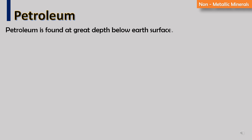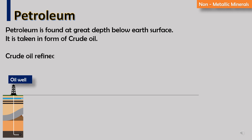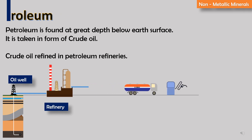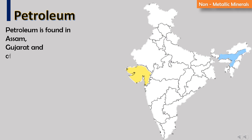Petroleum is found at great depth below the earth's surface. It is taken in the form of crude oil, which is refined in petroleum refineries. Petroleum is found in Assam, Gujarat, and off the coast at Bombay High.